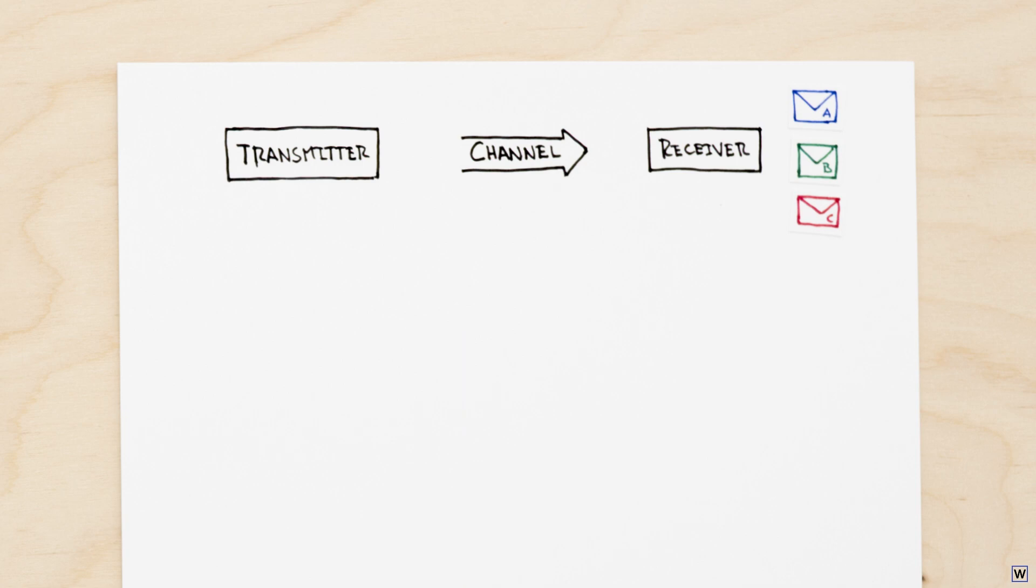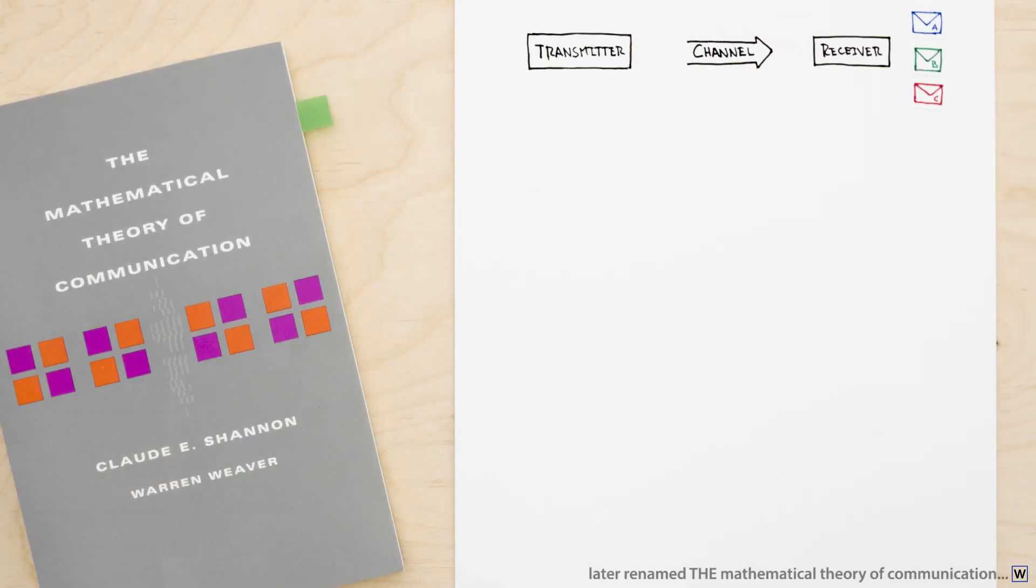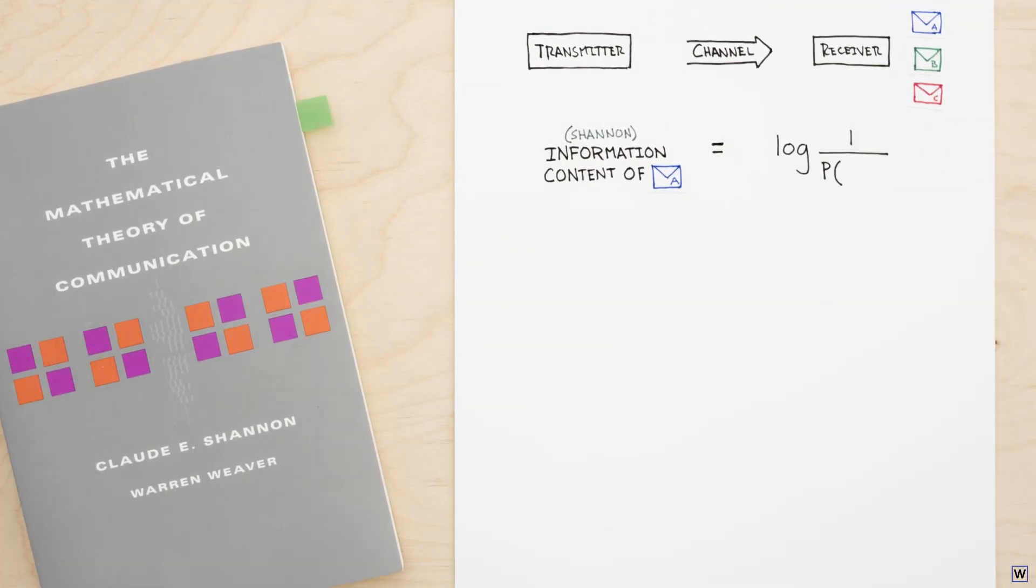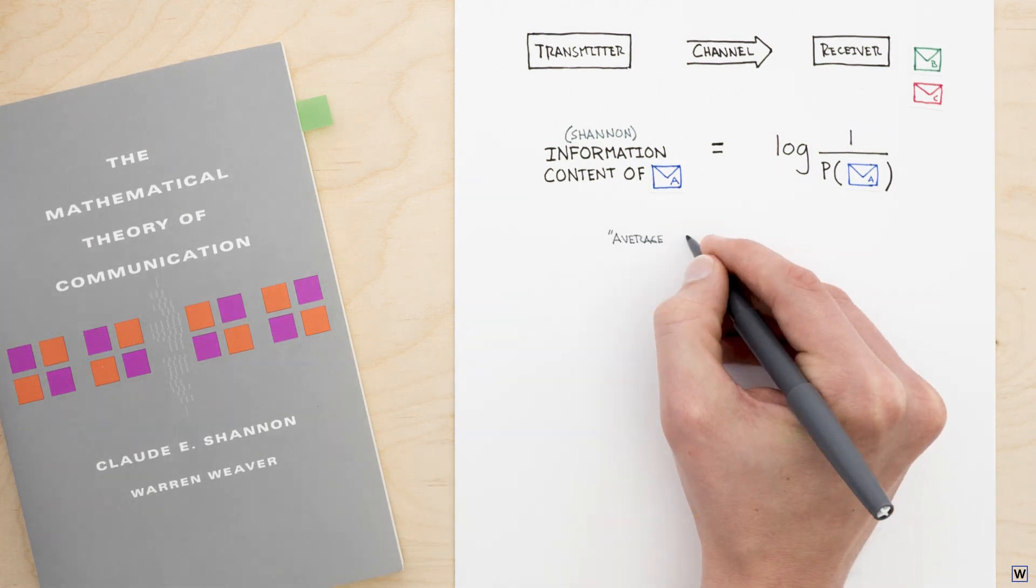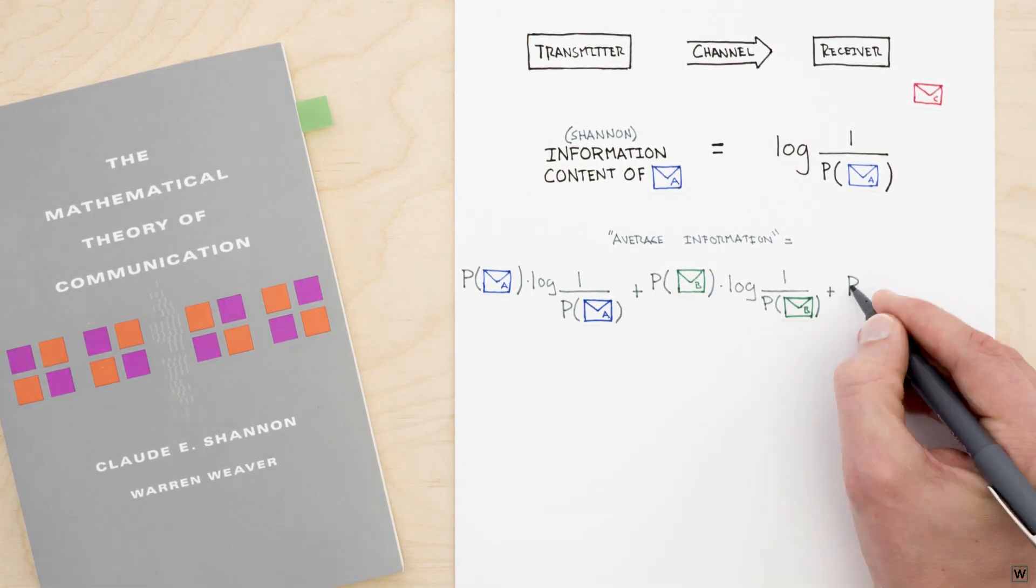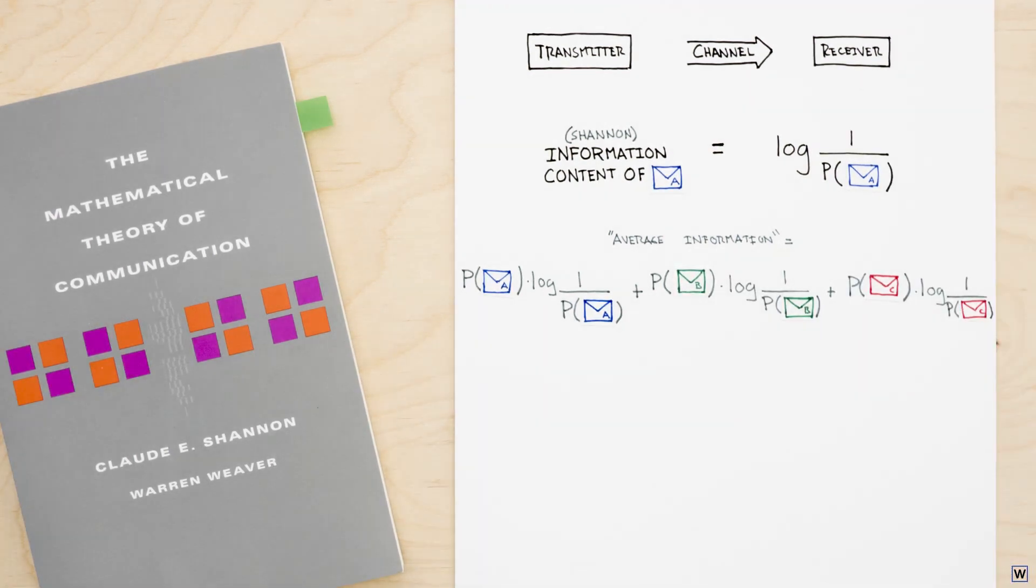In his seminal work, A Mathematical Theory of Communication, Shannon argues that the way we should measure the information contained in a message is as the logarithm of 1 over the probability of the message occurring. Further, we can average the information contained in multiple messages by taking a weighted average over message probabilities. That is, multiplying the probability of each message by the information contained in the message and adding.